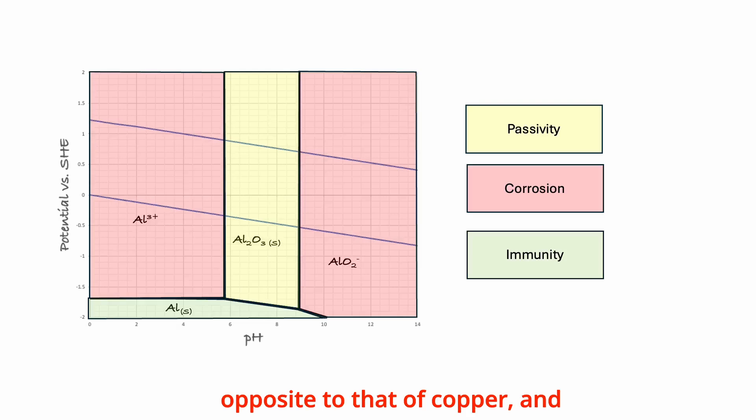Aluminum exhibits behavior opposite to that of copper and somewhat similar to zinc, except that the immunity region for aluminum is at much lower potentials. With respect to pH, aluminum corrodes at both low and high pH levels, but remains passive in the intermediate range, where stable films can form on the surface.